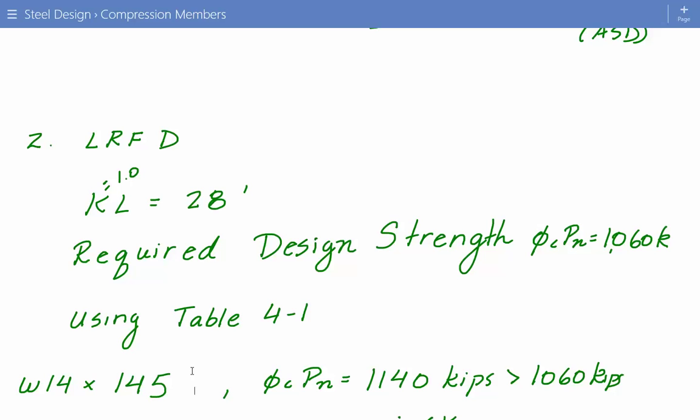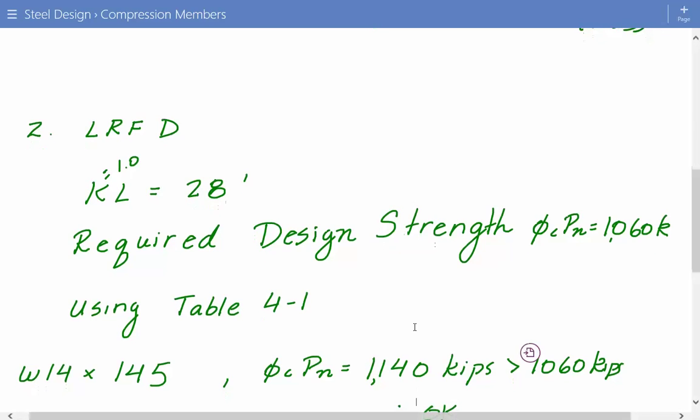We have W14 by 90, 99 doesn't pass, 109 doesn't pass, 120 doesn't pass. W14 by 132 has a design strength of 973 kips, so we're getting closer but that's still not enough. W14 by 145 has a design strength of 1,040 kips, and this is greater than 1,060 kips which is our required strength, so this is satisfactory. W14 by 145.